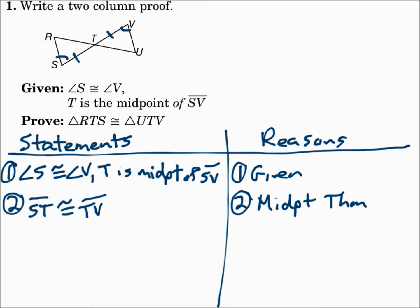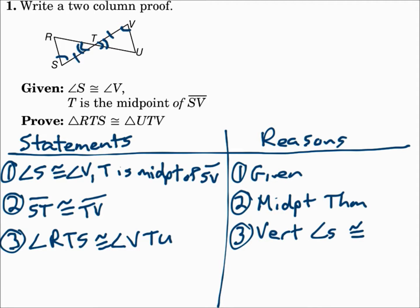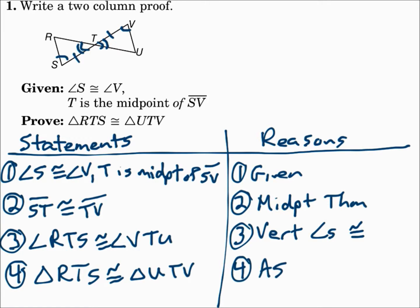Is that enough? No — so let's keep looking. Are there vertical angles? Yes. Angle RTS is congruent to angle UTV because vertical angles are congruent. So now we have a pair of angles, a pair of sides, and a pair of angles. That's enough — triangle RTS is congruent to triangle UTV by Angle-Side-Angle. Remember: start with what you're given, then find other pairs of congruent parts like vertical angles or midpoints, and once you have enough, say the triangles are congruent.